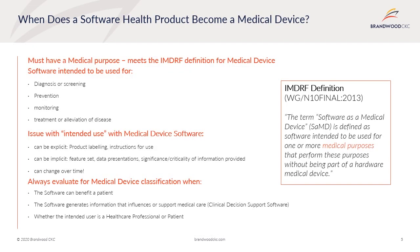The big question is: when does a software health product become a medical device? A software health product is considered a medical device if it meets the IMDRF definition. Software as a medical device, or SAMD, is defined as software intended to be used for one or more medical purposes that perform these purposes without being part of a hardware medical device. It must have a medical purpose. Put simply, if the intended use of the standalone software includes diagnosis, screening, prevention, monitoring, treatment, or alleviation of disease, it qualifies.